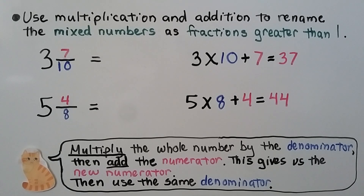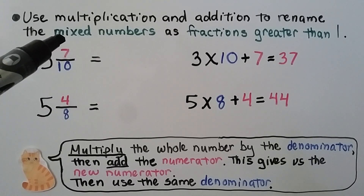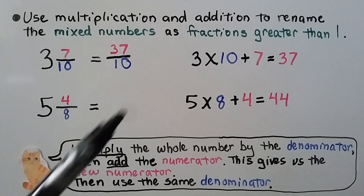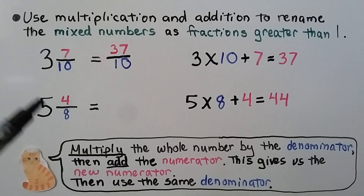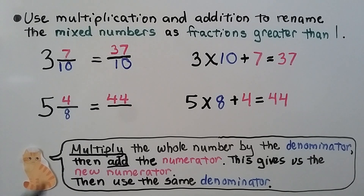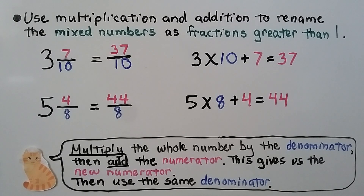We use multiplication and addition to rename mixed numbers as fractions greater than one. For three and seven tenths: multiply the whole number by the denominator, three times ten is thirty, then add the numerator — thirty plus seven is thirty-seven — over the same denominator ten. Three and seven tenths equals thirty-seven tenths. For five and four eighths: five times eight is forty, plus four is forty-four, over eight. Five and four eighths equals forty-four eighths. Remember: multiply the whole number by the denominator, then add the numerator, and keep the denominator.